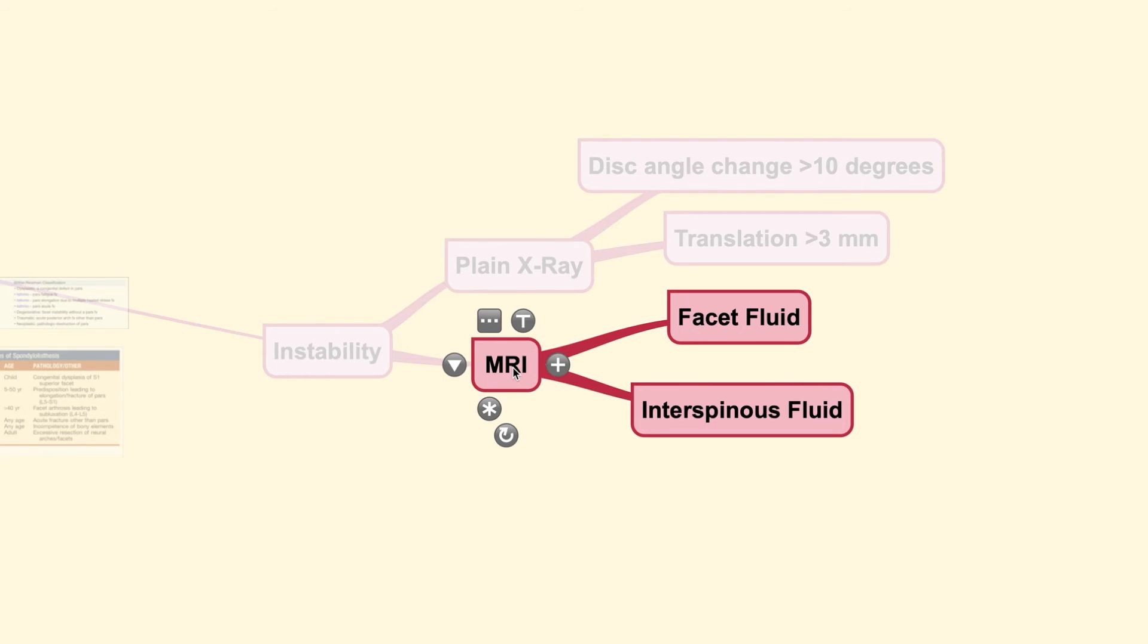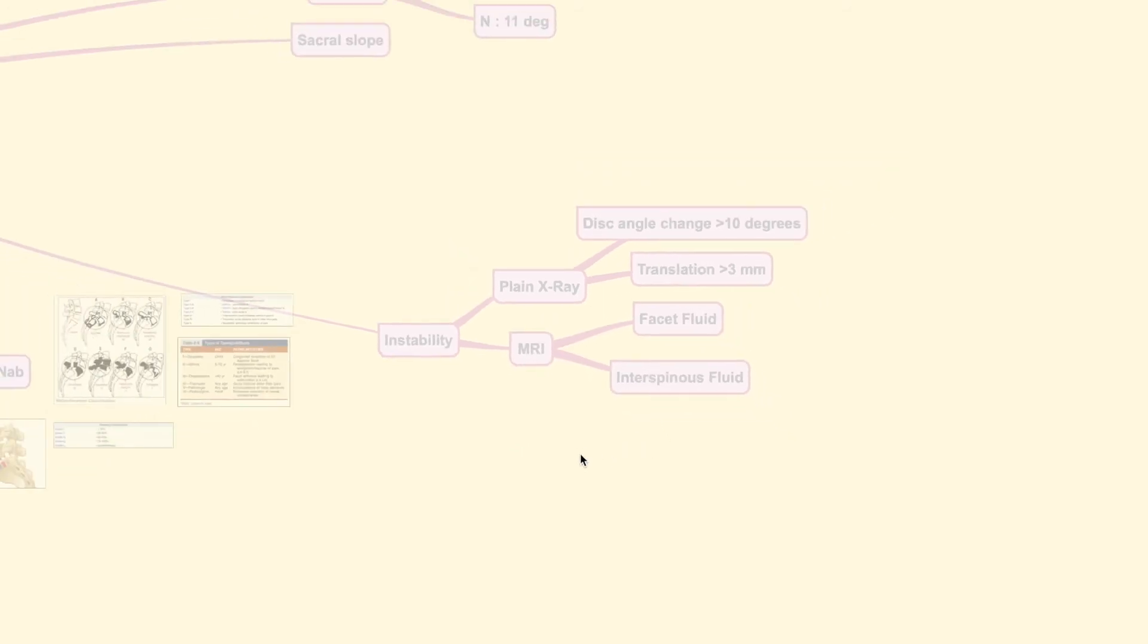Now, for the MRI itself, you usually cannot perform a dynamic view because moving around while the MRI image is being taken may distort the images. And the MRI findings that could be sought out is the presence of facet fluid or interspinous fluid.